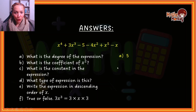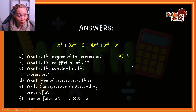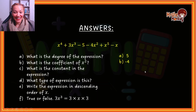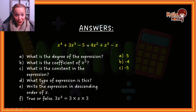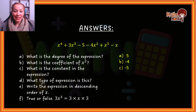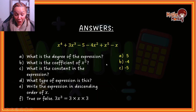What is the coefficient of x squared? Here's x squared — the coefficient is the number and the sign in front of x squared, so the answer for B is negative 4. What is the constant in the expression? The value that does not have a variable attached to it is negative 5 — you can see it doesn't have an x or y attached to it. What type of expression is this? Pluses and minuses separate terms, so counting the terms: 1, 2, 3, 4, 5, 6 terms — more than 3, so we call that a polynomial.